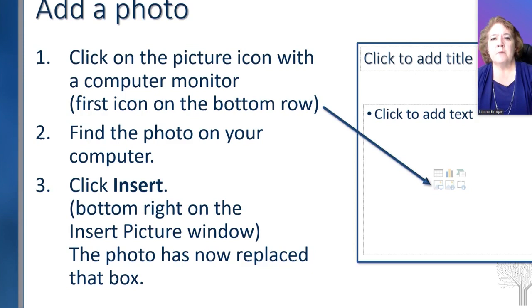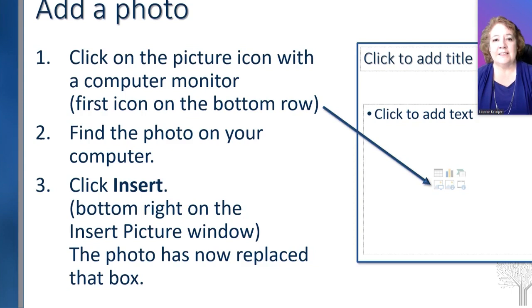How do we add a photo now? Because that's the most important part. Inside the box are six little icons in the middle — they're faint, but when you move your mouse over them, they get darker. We want to click on the bottom left one — it's a square that has a mountain and a little computer in the bottom right. That means you're grabbing that photo from your computer. When you click on it, it will open up your file manager, allow you to go find the picture, click on the picture, click on insert, and the picture now is in the box.